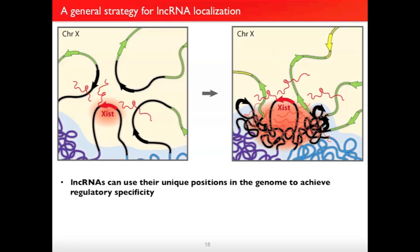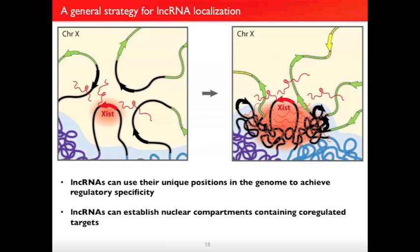We've learned two things here. First, the ability of XIST to spread in three dimensions takes advantage of a unique property of lncRNAs: unlike an mRNA, which must be exported to the cytoplasm and translated to be functional, a lncRNA is functional upon transcription. It can use its unique genomic position to achieve regulatory specificity for nearby sites in three dimensions, which may explain why lncRNAs with even low expression can reliably find their genomic targets. Second, lncRNAs may play an active role in changing chromosome architecture and establishing nuclear compartments containing the co-regulated targets of lncRNA complexes.